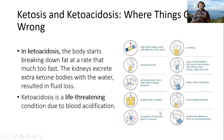In ketoacidosis, the body starts breaking down fat at a rate that is much too fast. The kidneys excrete extra ketone bodies with water, resulting in fluid loss. Ketoacidosis is a life-threatening condition due to blood acidification.